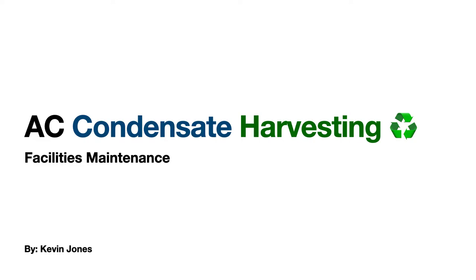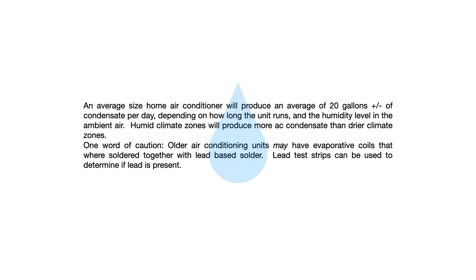We're talking about AC condensate harvesting. An average size home air conditioner will produce an average of 20 gallons plus or minus of condensate per day, depending on how long the unit runs and the humidity level in the ambient air. Humid climate zones obviously will produce more AC condensate than drier climate zones.